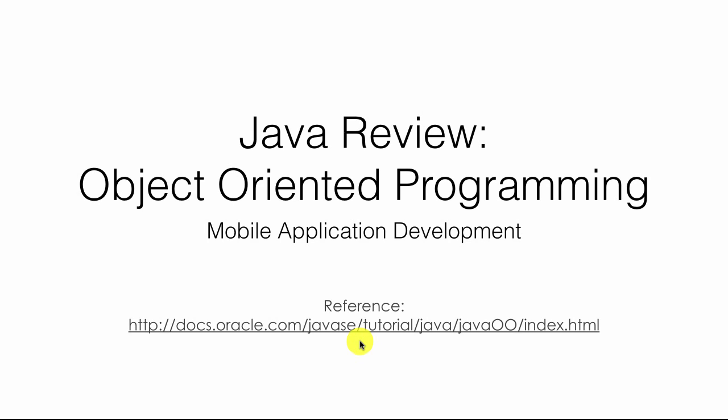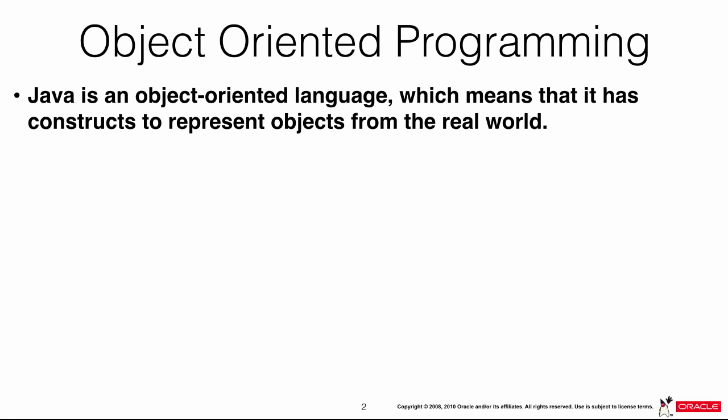Let's talk about object-oriented programming. Java is an object-oriented programming language, and this means that the Java world is constructed with objects. These objects represent objects from the real world — one very common example is a car. We need to create an equivalent object in the Java world, which would be a car object.